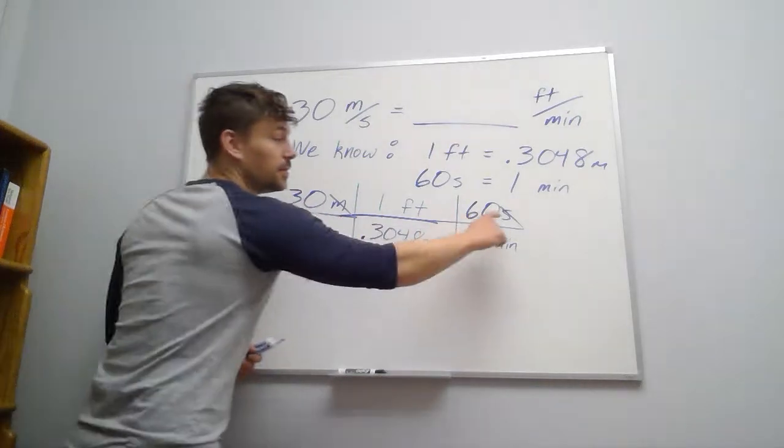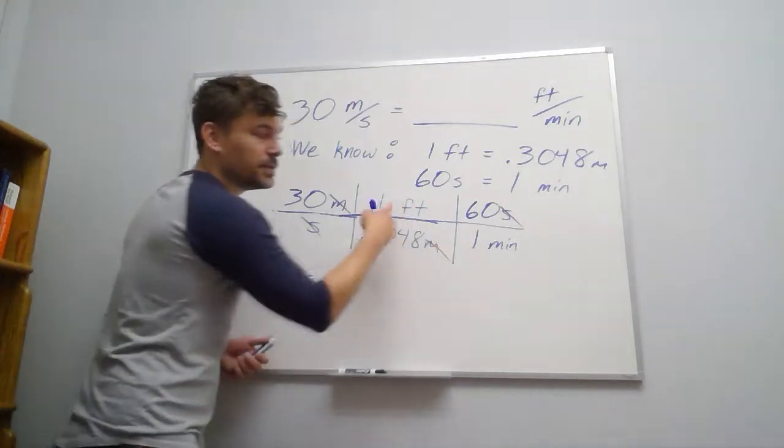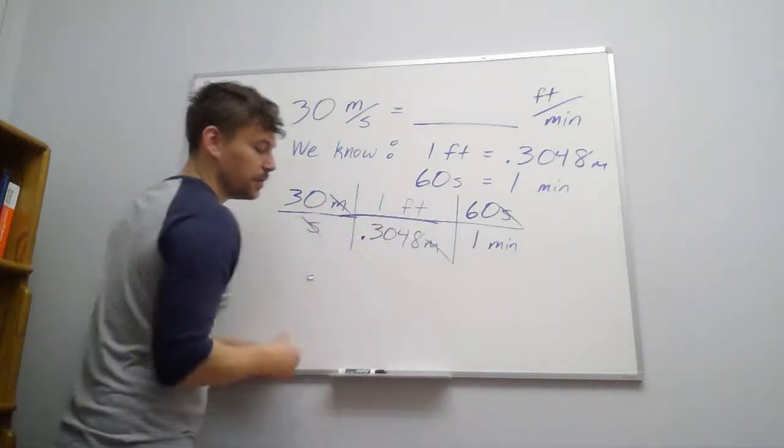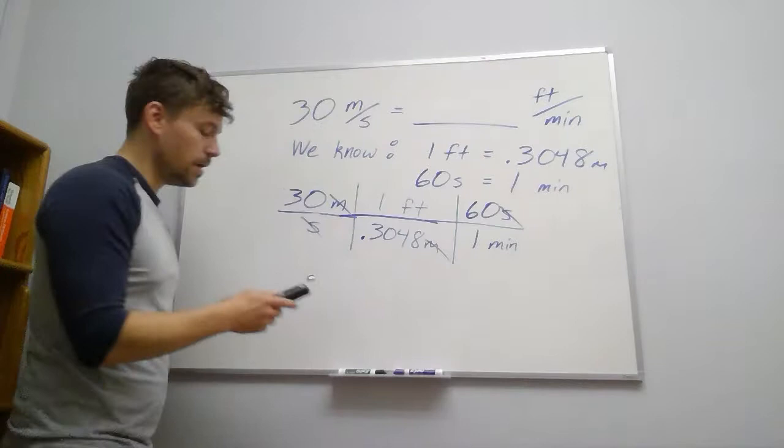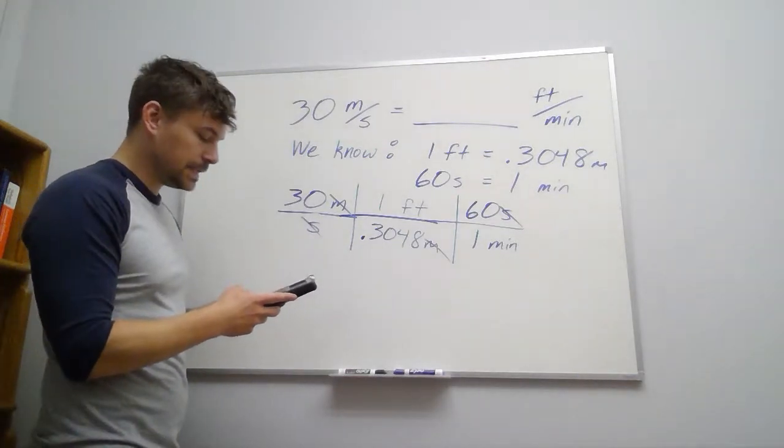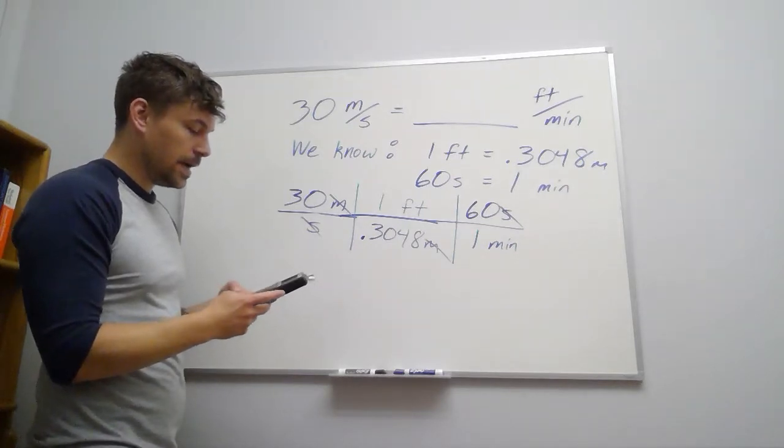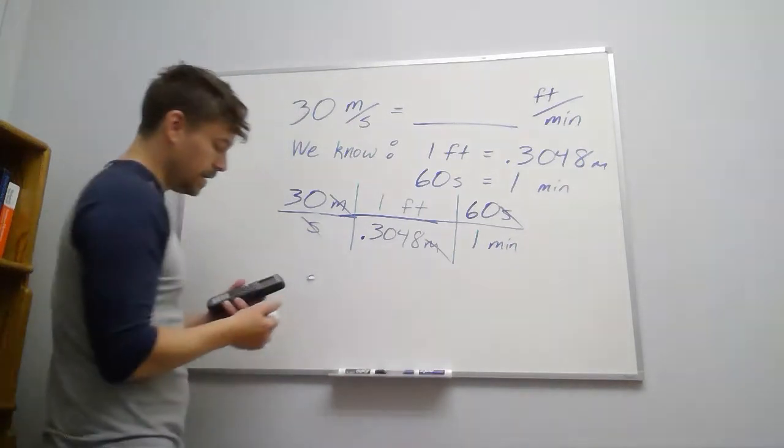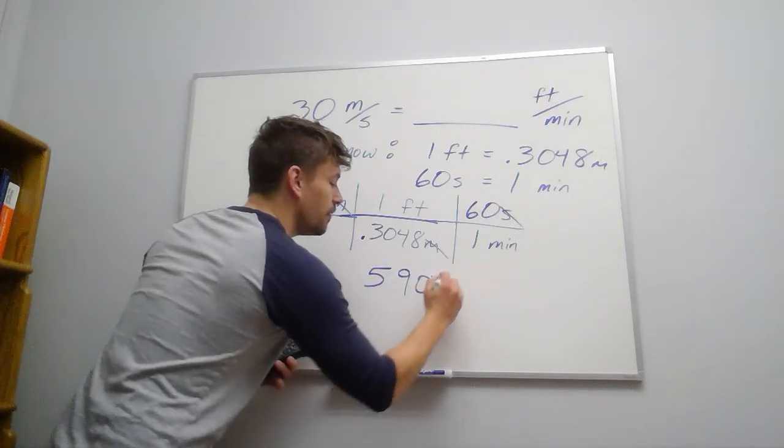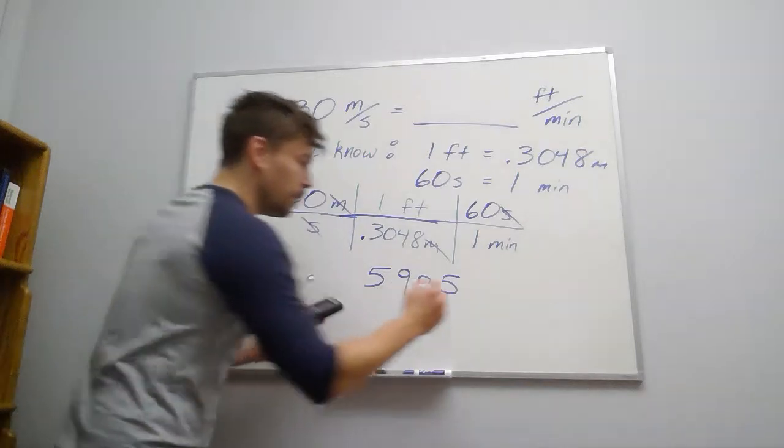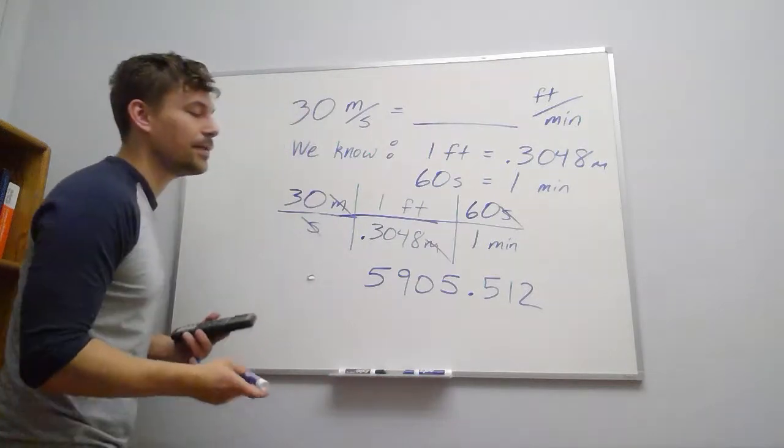So let's multiply across the top and divide by anything in the bottom. These ones don't really change anything. So you can just focus on the more useful pieces. So we can say 30 times 60 divided by 0.3048, and I believe we end up with 5,905.512 if we round at that point.